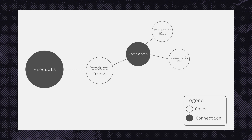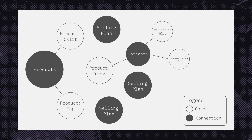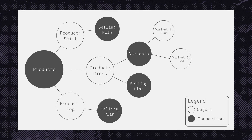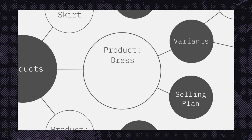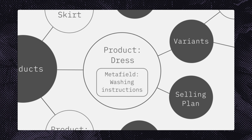This dress and other clothing, like skirts and tops, might be included in a summer collection and sold via different selling plans — for example, a clothing rental subscription or a prepaid option before the summer collection is launched. Other information stored as metafields, like washing instructions, can all be easily accessed with GraphQL since it's modeled as a network.